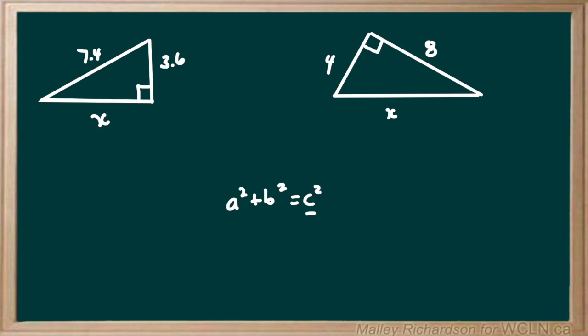We can find the hypotenuse by finding the right angle of the triangle and going directly across from it. In our first triangle we have our right angle in the corner as shown by the little box, and the side length directly across from it is the hypotenuse.